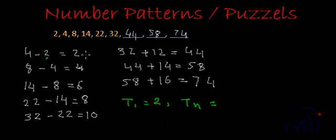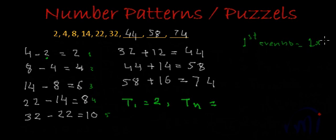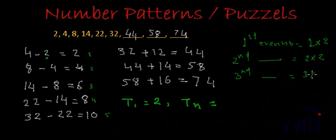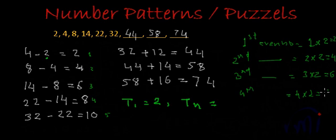This 2 is actually the first even number. 4 is the second even number. 6 is the third even number. 8 is the fourth even number. And 10 is the fifth even number. The first even number is 1 multiplied by 2. The second even number is 2 multiplied by 2. The third even number is 3 multiplied by 2. And the fourth even number is 4 multiplied by 2, which is 8.